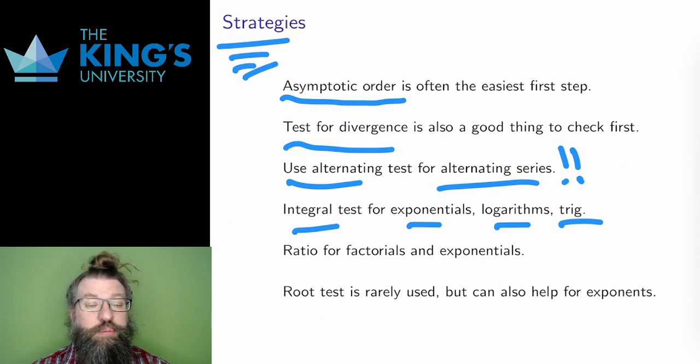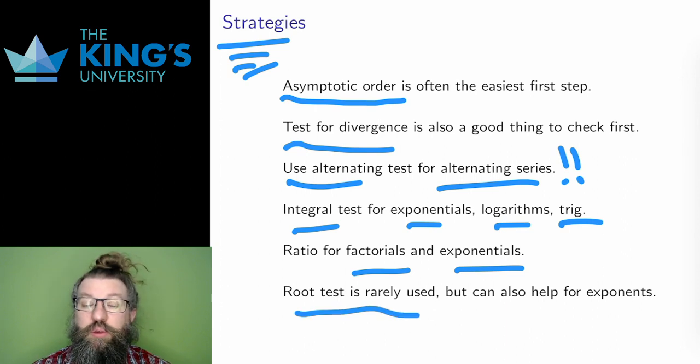The ratio test is particularly good for factorials because lots of terms will cancel and it's often also good for exponents for the same reason. The root test is pretty rarely used, but it can also be good for some exponents and there are some exponent expressions that work better in the root test than they do in the other tests.